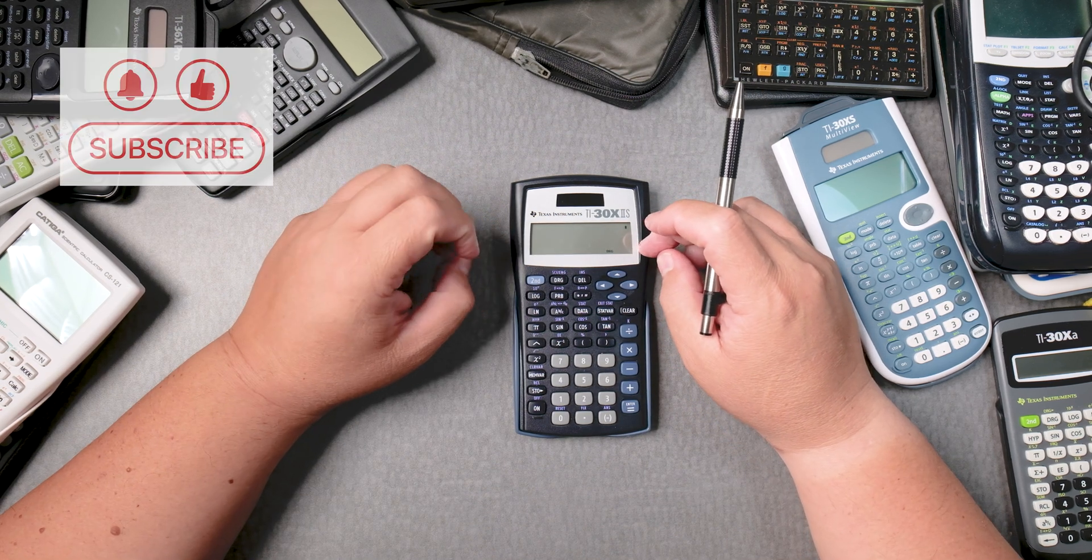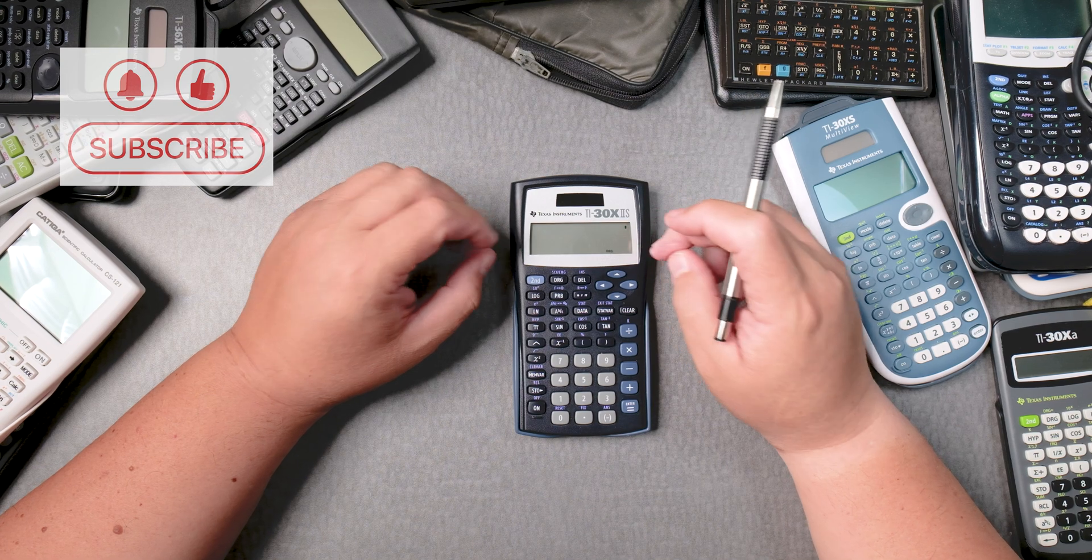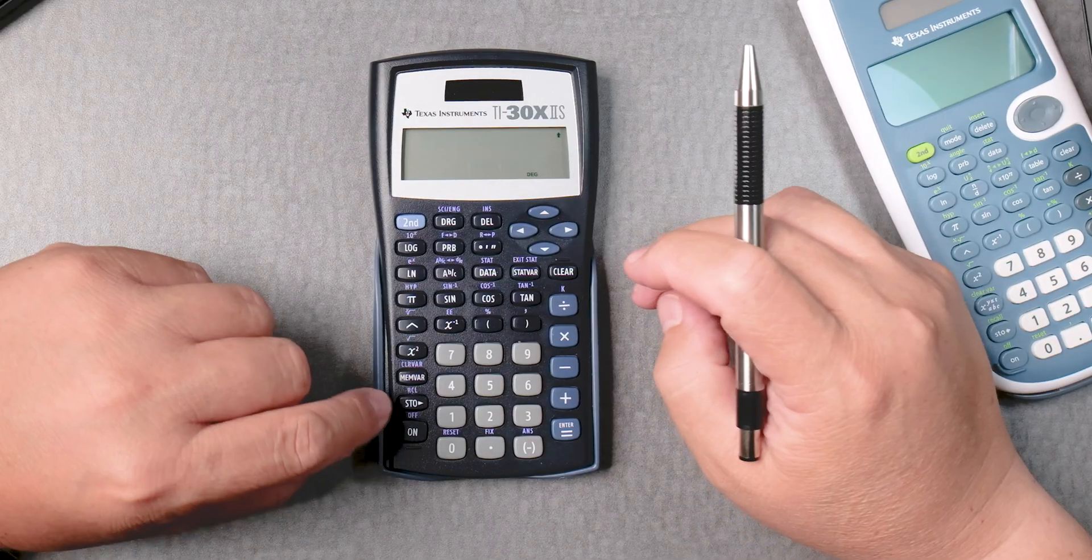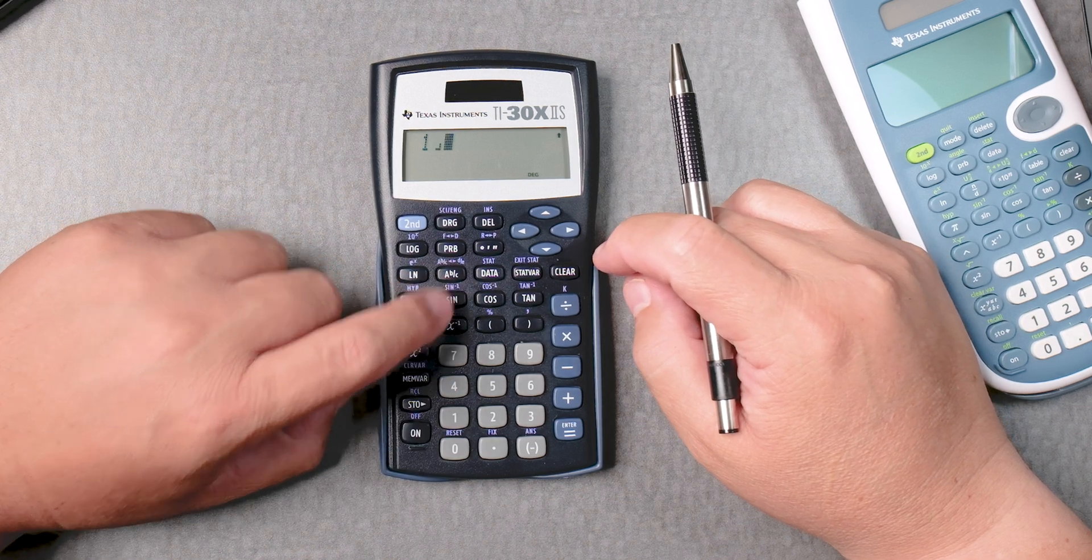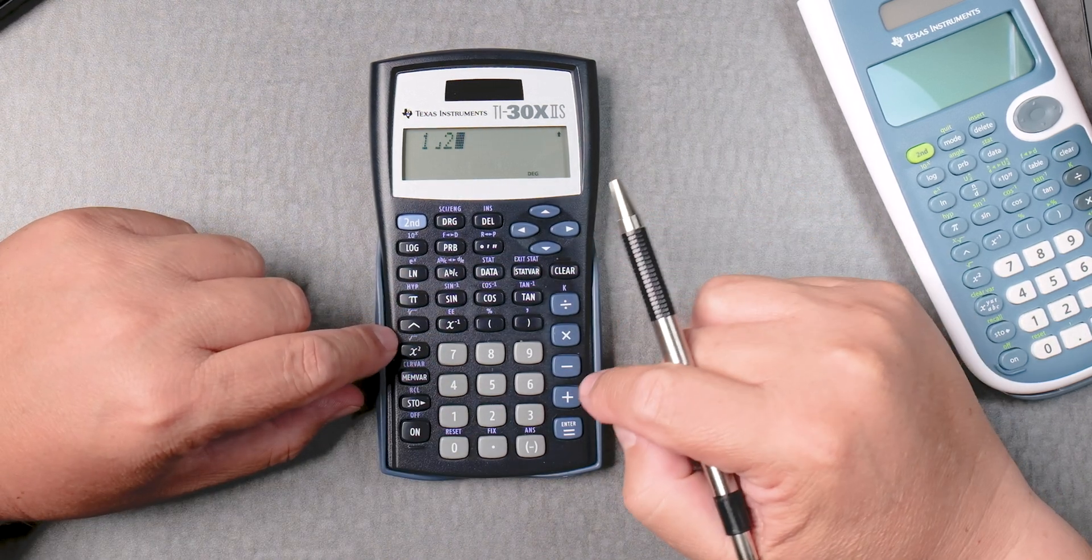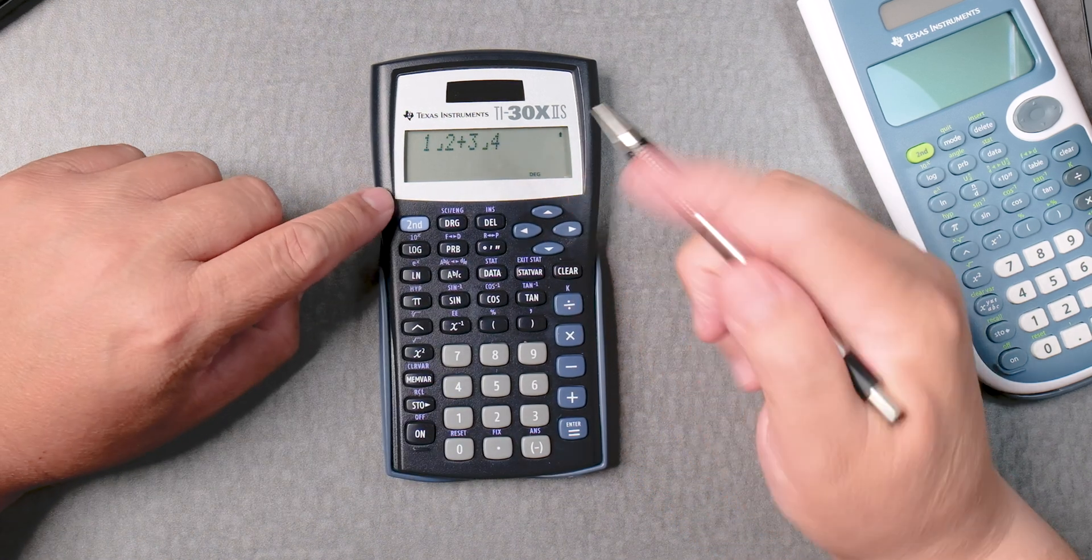Okay, so this is the Texas TI-30X2S and we want to do fractions. So let's do something like half, that's 1 ABC 2 plus 3 ABC 4 for three-fourths.